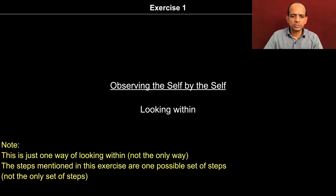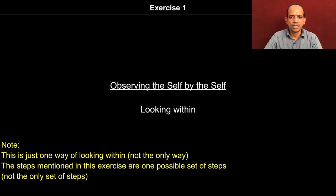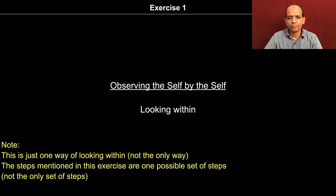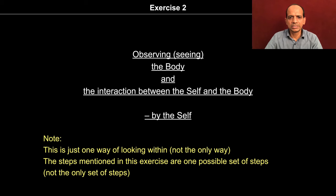In exercise 1, we try to observe the self by the self. I hope by now you have been able to understand all the 7 steps of exercise 1 and are also practicing these steps. In exercise 2, we are trying to observe the body and the interaction taking place between the self and the body. This observation is going to be made by the self because the self is the seer.